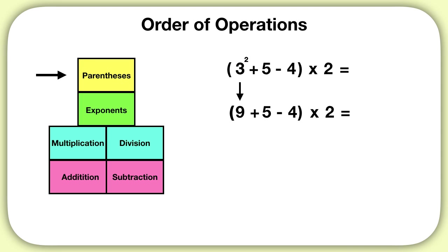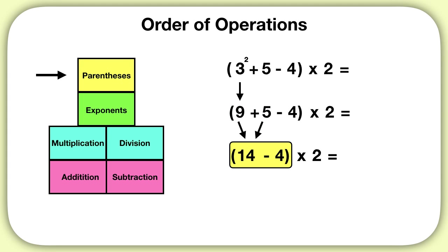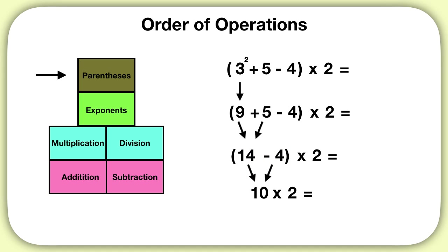Now what should I solve next? We still have parentheses, and we see both addition and subtraction inside. When you have both addition and subtraction, we work left to right, so we'll solve nine plus five first — that gives us fourteen. Now what should I solve next? I still have parentheses, so I solve fourteen minus four next, which gives me ten. Then I bring down the rest of my equation.